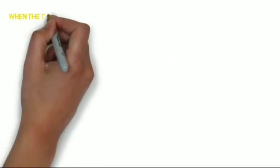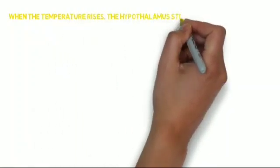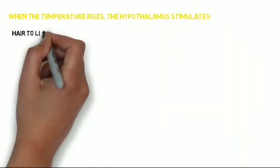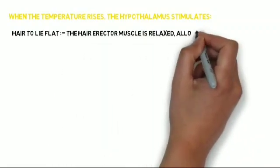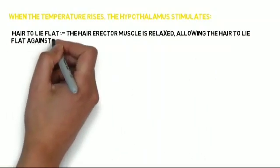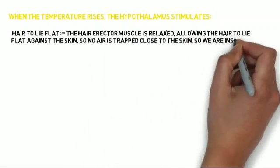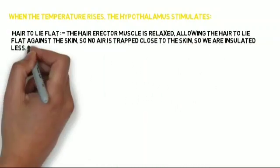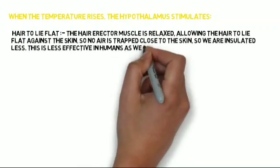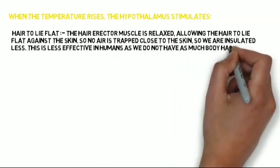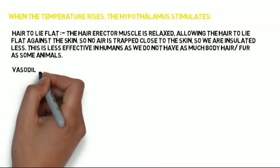When the temperature rises, the Hypothalamus stimulates the following. Hair to lie flat: the hair erector muscle is relaxed, allowing the hair to lie flat against the skin, so no air is trapped close to the skin, so we are insulated less. This is less effective in humans as we do not have as much body hair or fur as many animals.